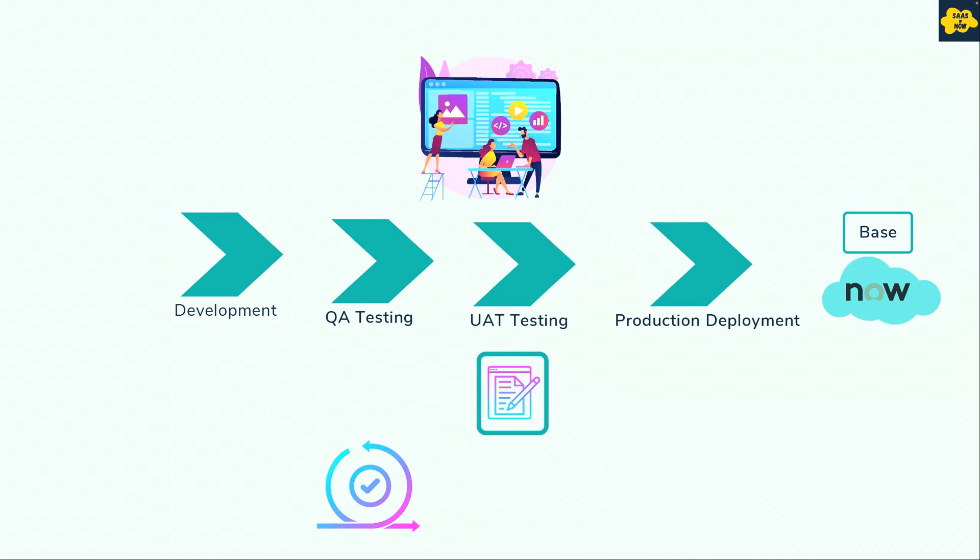and then code or development is moved to production. That means that feature is moved to production. Now this ensures that all features are working fine in production with the new feature and gives confidence to all parties involved.